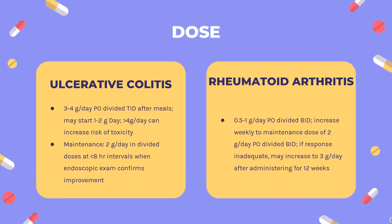Dose — Ulcerative colitis: For mild to moderate cases, adjunctive therapy in severe cases, and prolongation of remission: 3–4 g/day PO divided TID after meals; may start at 1–2 g/day. 4 g/day can increase risk of toxicity. Maintenance: 2 g/day in divided doses at less than 8-hour intervals when endoscopic exam confirms improvement.